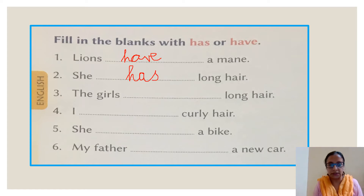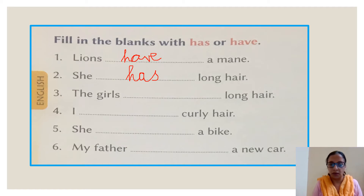Let's move on to the third sentence: the girls dash long hair. Girls — more than one person. So what will come in the blank? Have. H-A-V-E. Have.